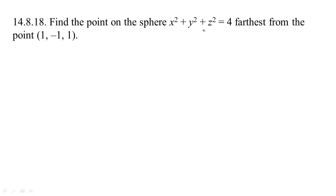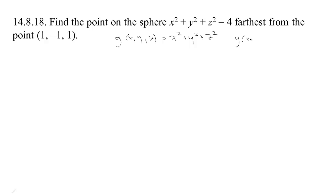Here we need to find a point that lies on a particular sphere that is farthest from a given point in space — farthest from the point (1, -1, 1). We can see what our constraint is: if g(x, y, z) = x² + y² + z², then saying we have to be on the sphere means g(x, y, z) = 4. So we've got our function g, and now we need to maximize the distance from the point (1, -1, 1).